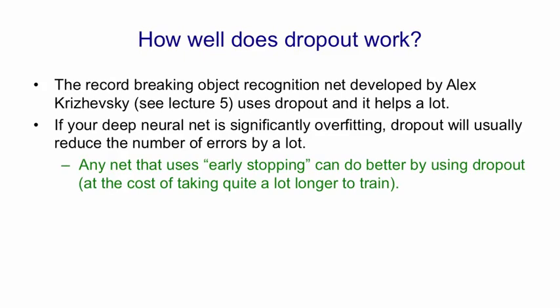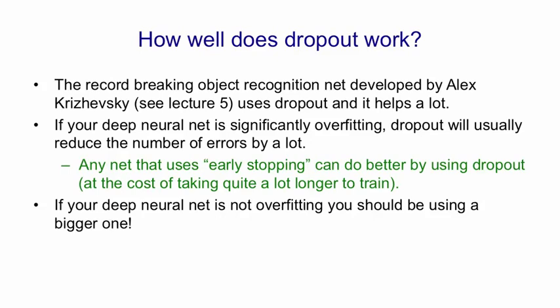It would, of course, take longer to train, and it might need more hidden units. If you've got a deep neural net and it's not overfitting, you should probably be using a bigger one and using dropout. That's assuming you have enough computational power.